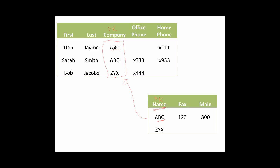This gives us a way to join back the data that we've split. In our company table we have name, fax, and main — and there's only one record for ABC. So now when it comes time to update information, when ABC says their fax number has changed, there's only one place to put in the new fax number. That's good.